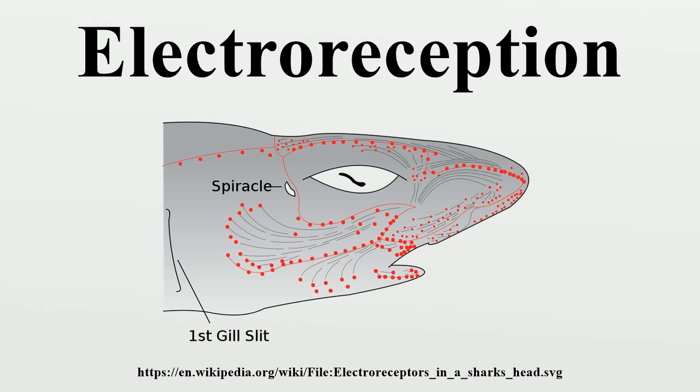The electroreceptive capabilities of the two species of echidna are much more simple. Western long-beaked echidnas possess only 2,000 receptors and short-beaked echidnas merely 400 that are concentrated in the tip of the snout. This difference can be attributed to their habitat and feeding methods.